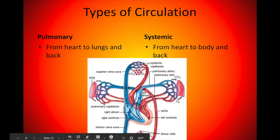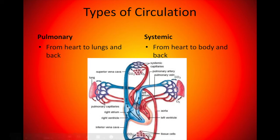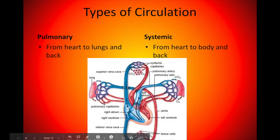To summarize: blood needs oxygen so it goes to the lungs to pick it up, pumps back to the heart to get pushed out to the body, where oxygen gets used and CO2 gets collected. It then goes back to the heart to get pushed back to the lungs to get rid of the CO2 and pick up more O2.